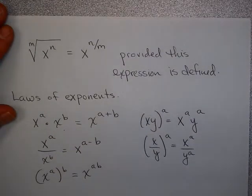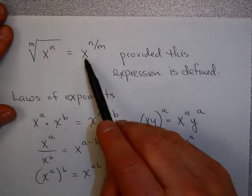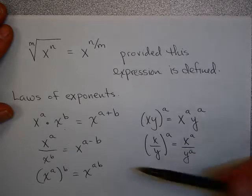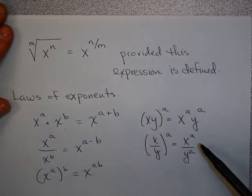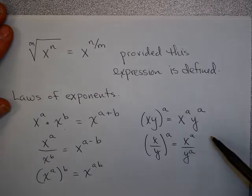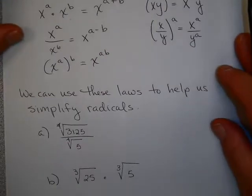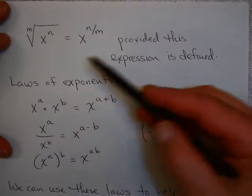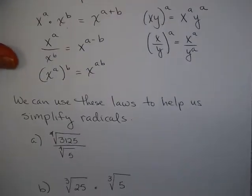In the last video, we talked about how the mth root of x to the n equals x to the n over m, provided this expression is defined. I mentioned briefly all these laws of exponents which we have seen before. We can use these laws to help us simplify radicals now that we know how to write a radical as a rational exponent.